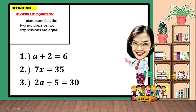Another: 2a minus 5 is equal to 30. 2a minus 5 is an expression, and 30 is also an expression. These two expressions are considered equal, which means that when you find the value of a, multiply it by 2, then subtract 5, the answer will be 30.